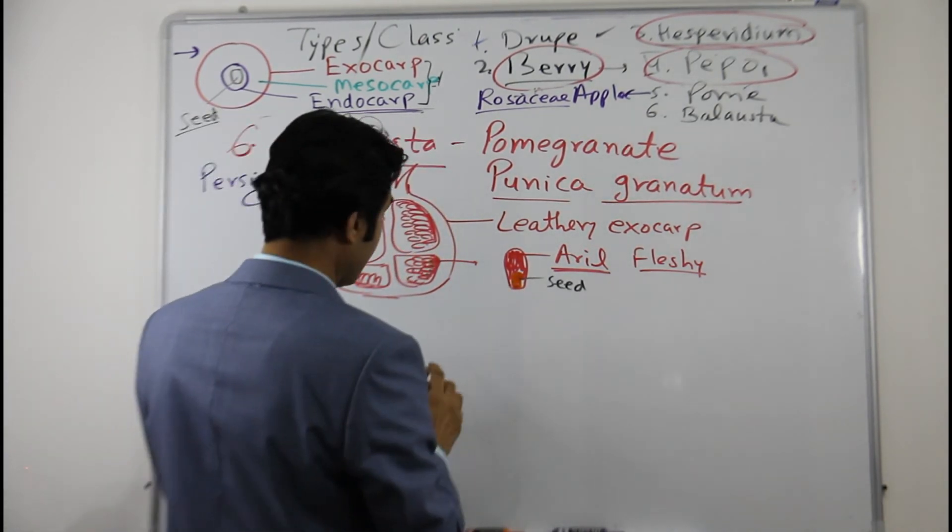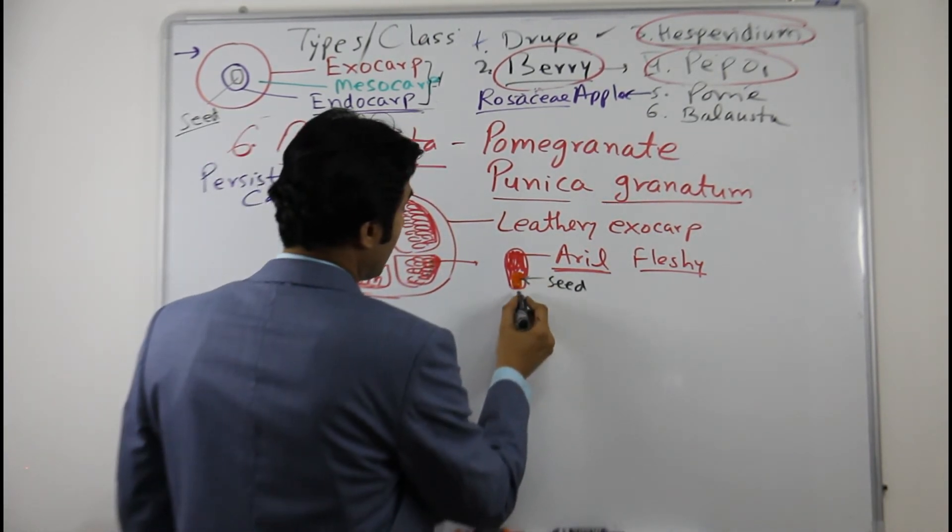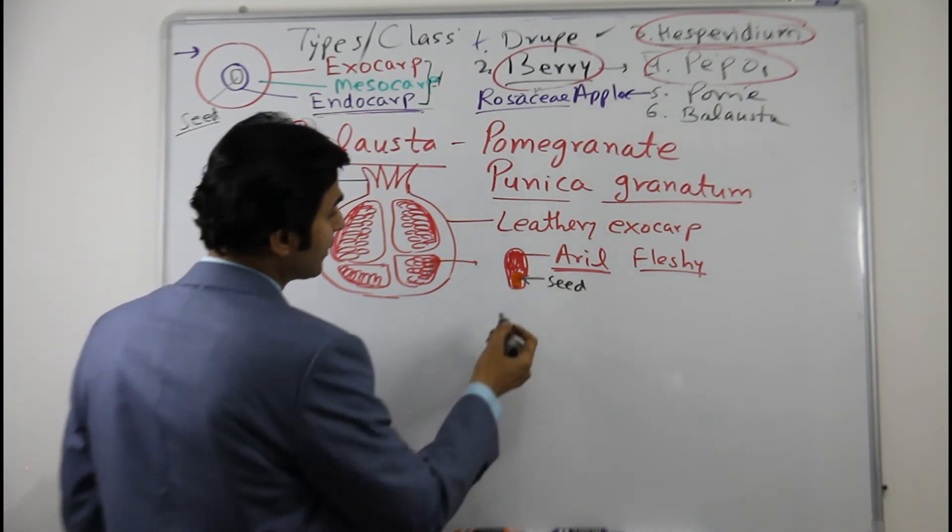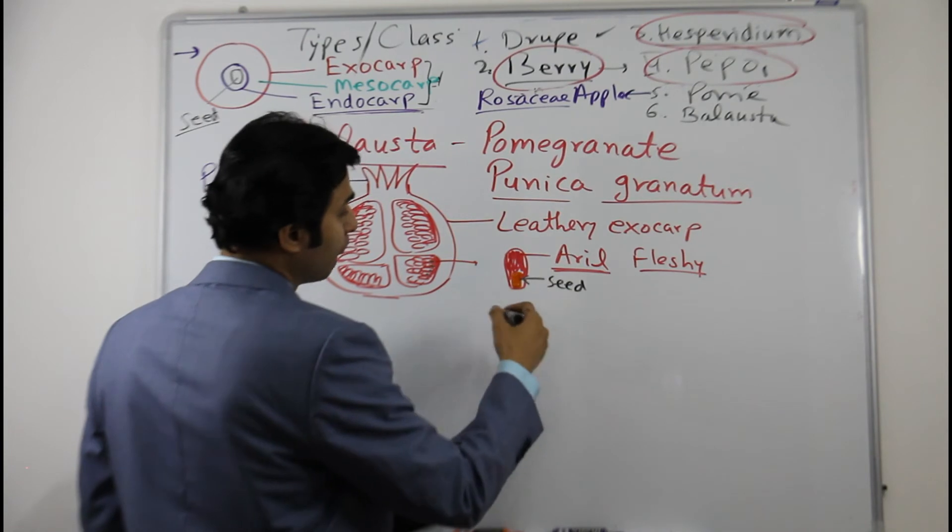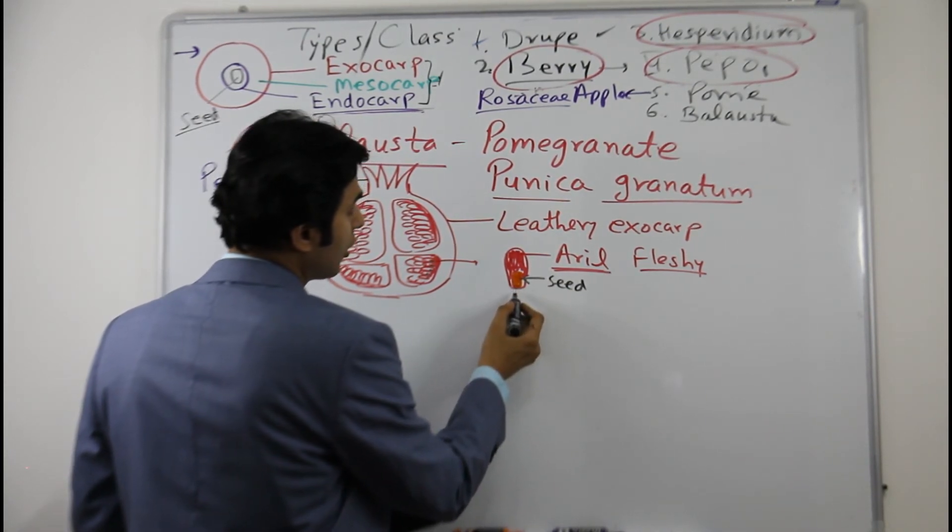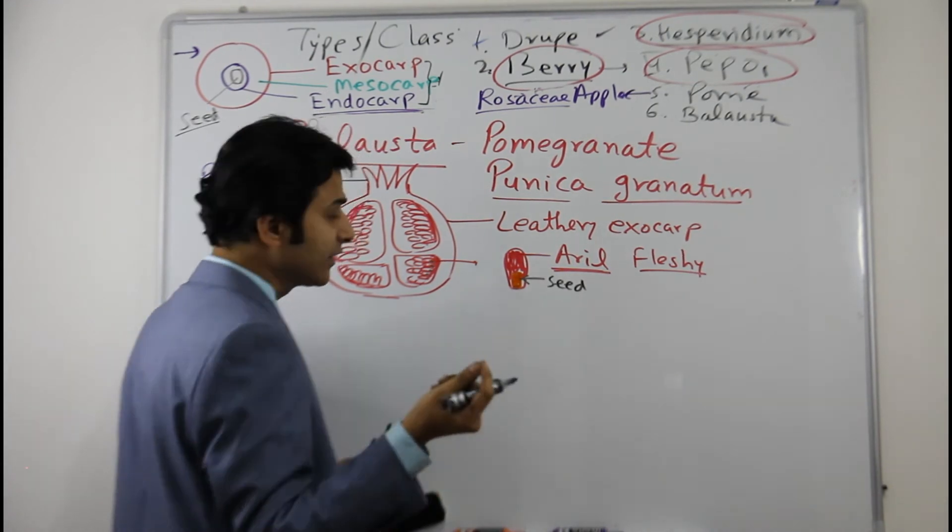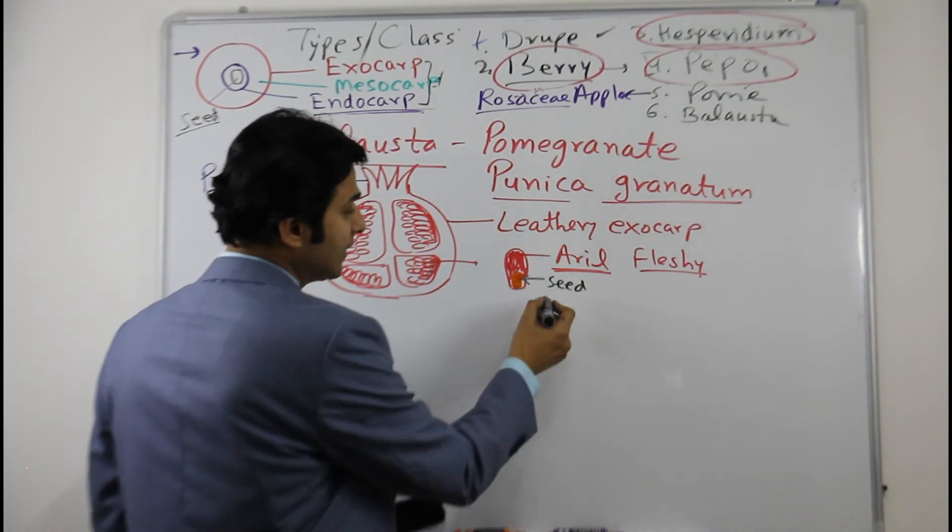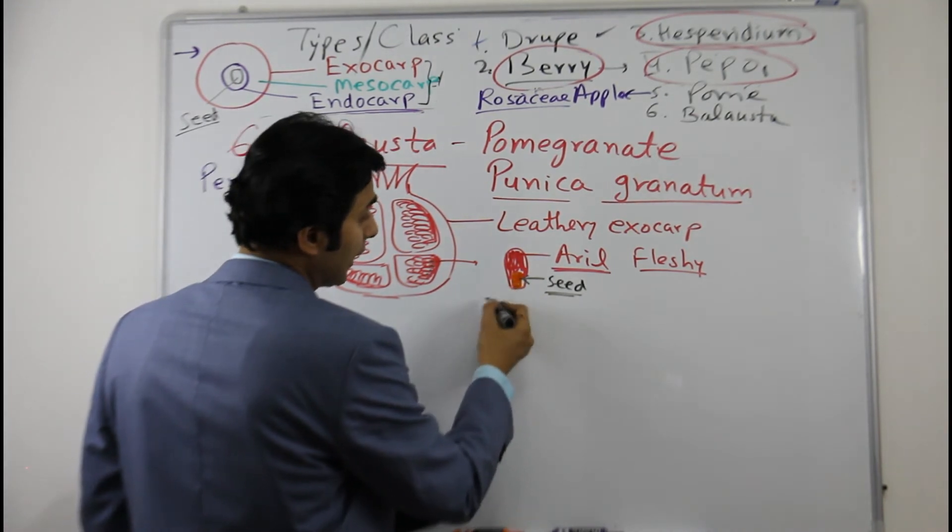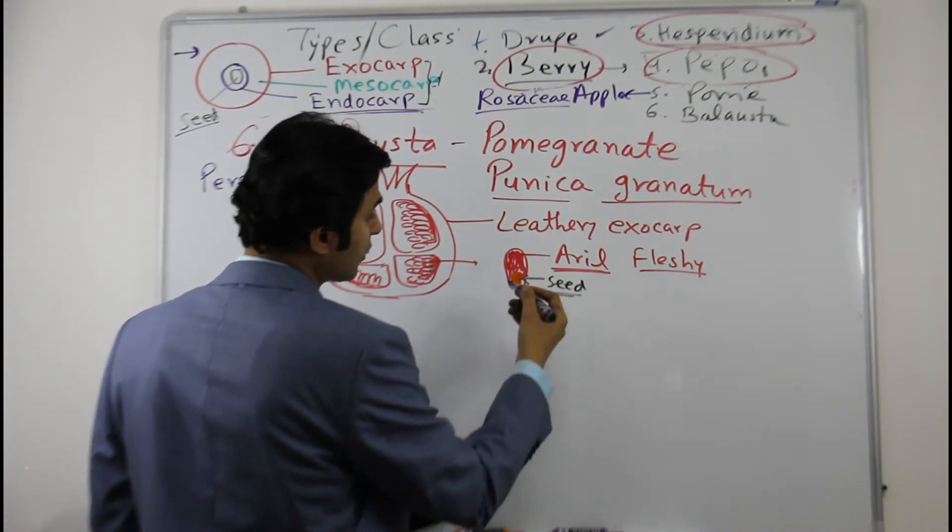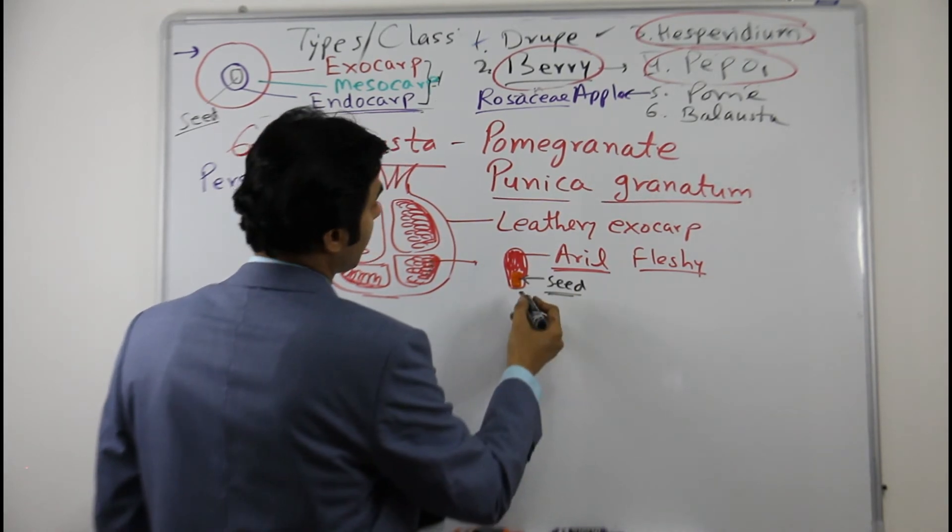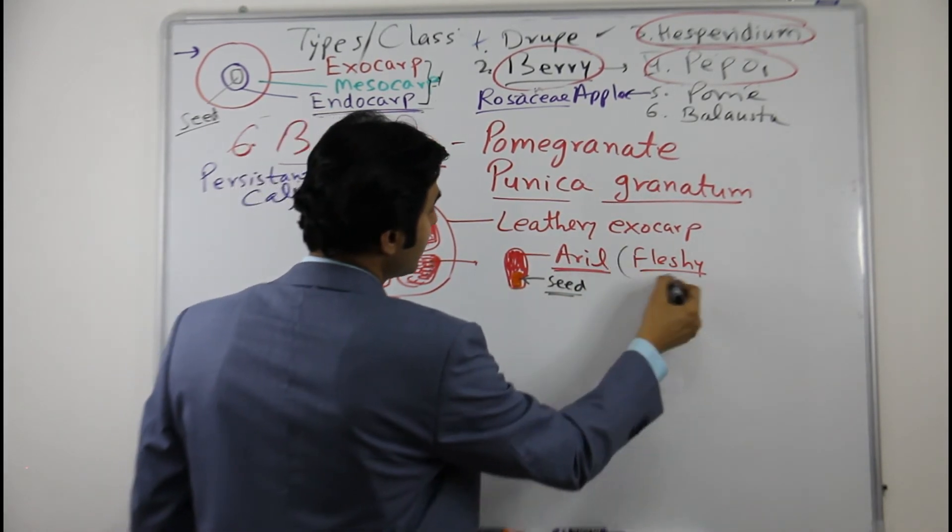And it has been studied that the aril is made or formed from the funiculus of the seed, because the seed is attached with the ovary by the funiculus. And also some part also developed from the seed coat or testa. So this is aril which is fleshy and we eat this, and this is all juicy.